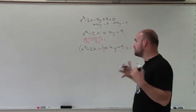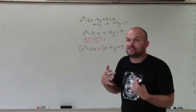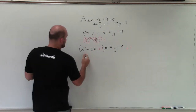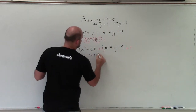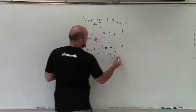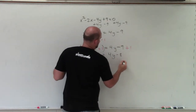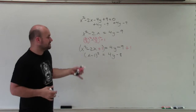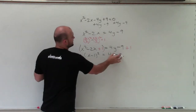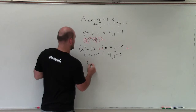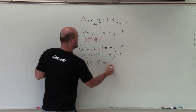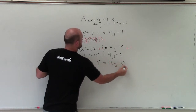And a perfect square trinomial can now be factored into a binomial squared. So to convert this to a binomial squared, it's simply x minus 1 squared equals 4y minus 9 plus 1, which gives negative 8. So now I want to factor out 4 on the right side, and I'm left with x minus 1 squared equals 4 times y minus 2.